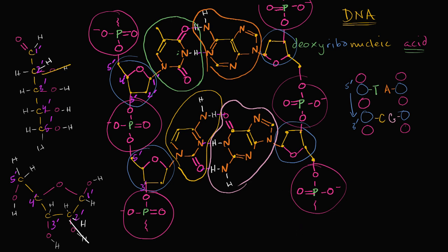What are we doing on the right-hand chain? Well, let's number them again. This is the one prime carbon. Now this is inverted relative to the other strand. One prime, two prime, three prime, four prime, five prime. Here you're going from phosphate, three prime, five prime phosphate, three prime, five prime phosphate. So the way the sugars are oriented going from top to bottom, you're going from three prime to five prime on the right-hand side. So if you draw an arrow from five prime to three prime, these strands are parallel but oriented in different directions — we would call the structure of DNA antiparallel.